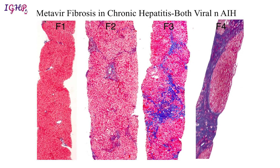Fibrosis in chronic hepatitis starts from the portal region, so it is called the portal-centric type of fibrosis. This is because the inflammation also starts from the portal region, and as inflammation damages the hepatocytes, fibrosis sets in, also starting from the portal region. The staging of chronic hepatitis has been described by different authors including Ishak, Metavir, and Batts and Ludwig staging — you can follow any system provided you mention which one you are using in your report.